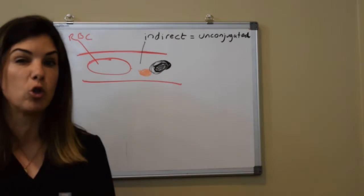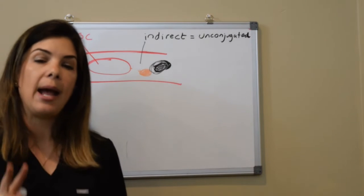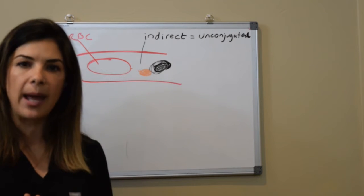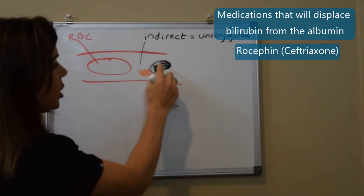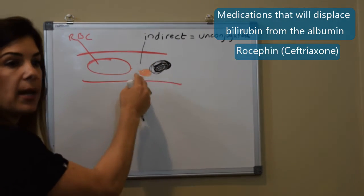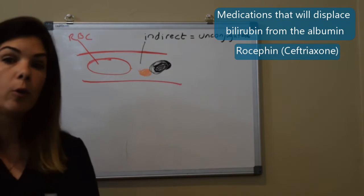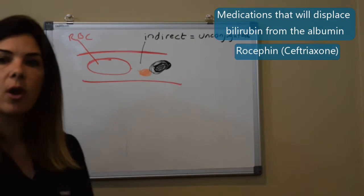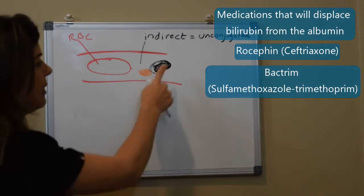Other things that bind notoriously are drugs that we really try to avoid in the NICU and the two biggest ones that will displace the bilirubin from the albumin are ceftriazone or Rocephin. It will literally barge in here throw off the bilirubin and so you have more free indirect bilirubin. So we don't use ceftriaxone or Rocephin for that reason and then the other drug that we don't use for that reason is Bactrim. Bactrim again can displace the bilirubin from the albumin.